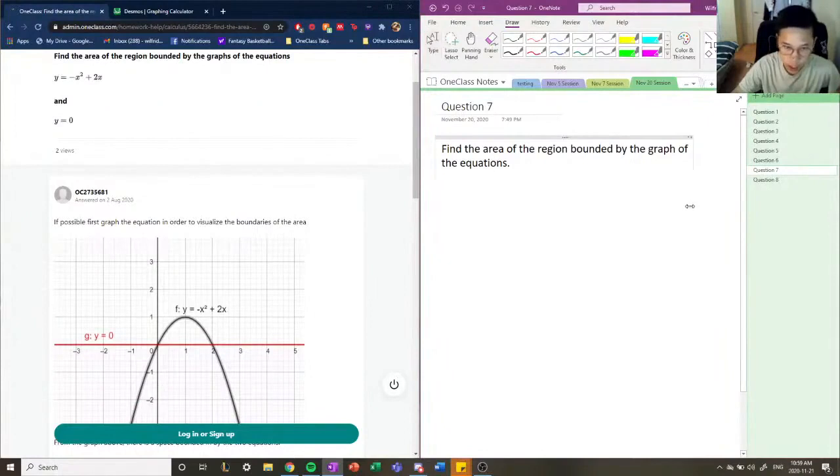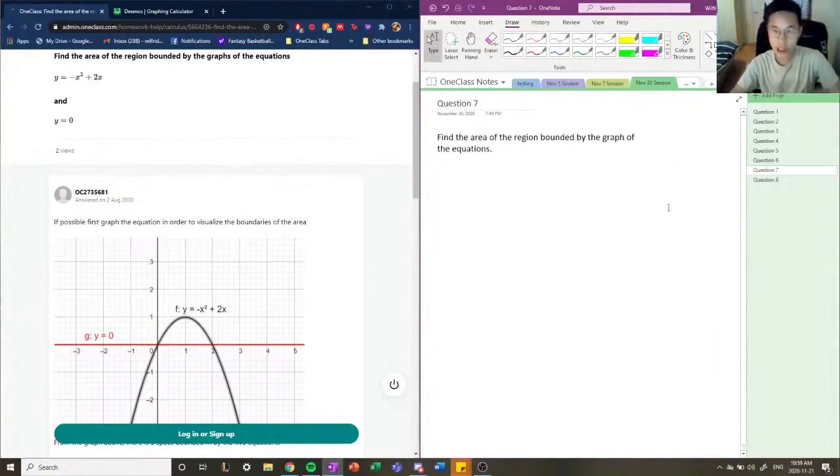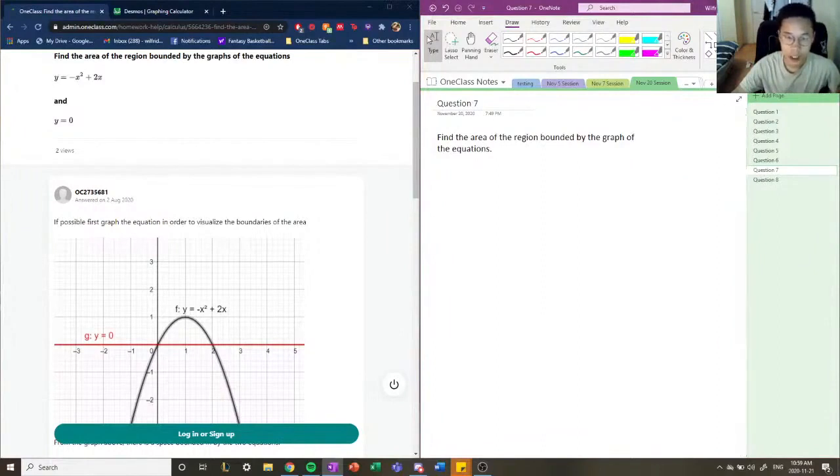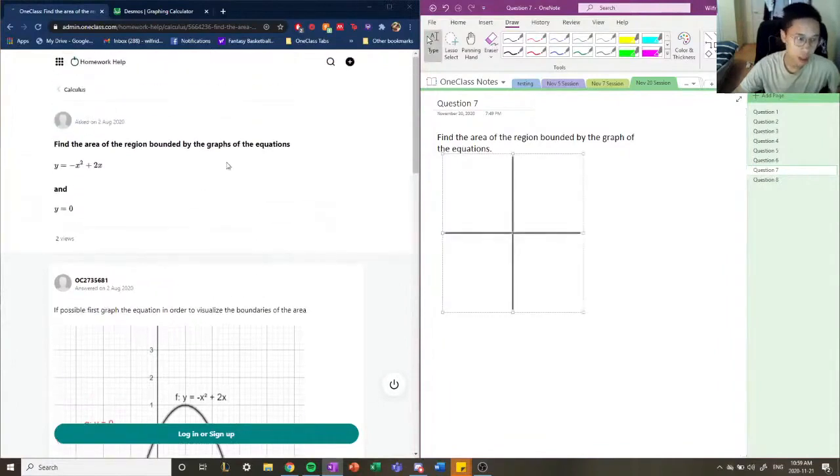So this is a classical integral question which asks us to find the area of the region bounded by two graphs. To do this, of course, you have to calculate the integral of a function, but you have to figure out the bounds first. So it's always very helpful to graph our functions first, our equation.